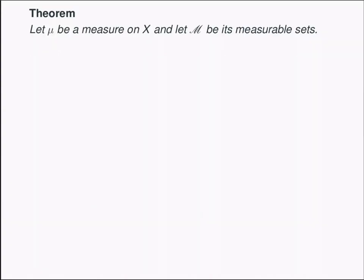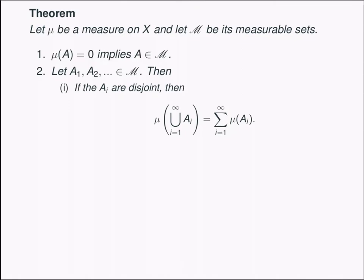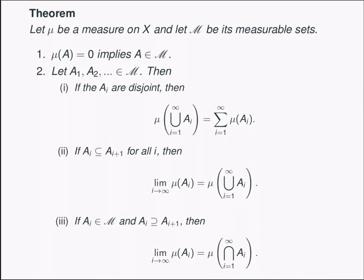Now if we restrict our measure to these measurable sets, then that measure is more nicely behaved. So first thing to observe before I talk about these properties is that if the measure of a set is equal to zero, then it is automatically measurable. So if I have a countable list of measurable sets, then if they are disjoint, then I have the additivity property. The measure of the union is equal to the sum of the individual measures. I also have the following continuity properties. If I have an increasing sequence of sets, then the limit of the measures is equal to the measure of the limit, where the limit in this case is equal to the union of the sets. And similarly, if I have a decreasing sequence of sets, then the limit of the measures is equal to the measure of the limiting set, which is just the intersection.